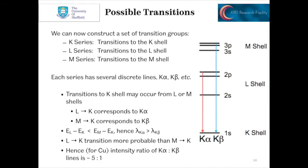We have a set of possible transitions that could occur. We could have transitions to the K shell, transitions to the L shell if it was an L electron that was ejected, or even transitions to the M shell. Each series — the K series, L series, M series — will have several discrete possible lines. So we could have, for example, K-alpha lines, K-beta lines, and so on.